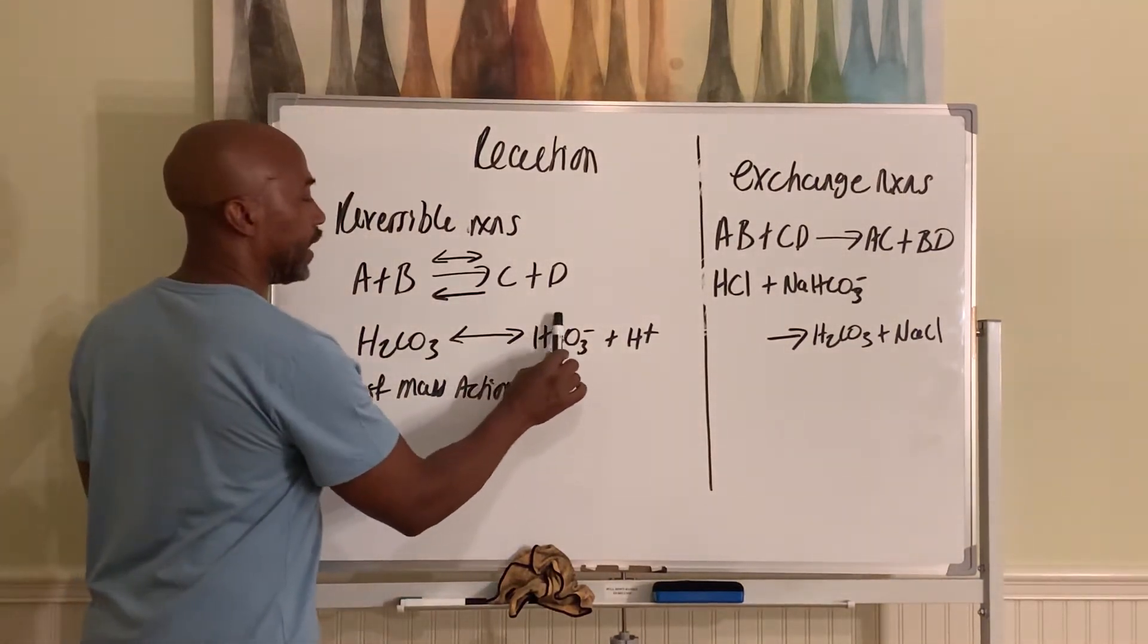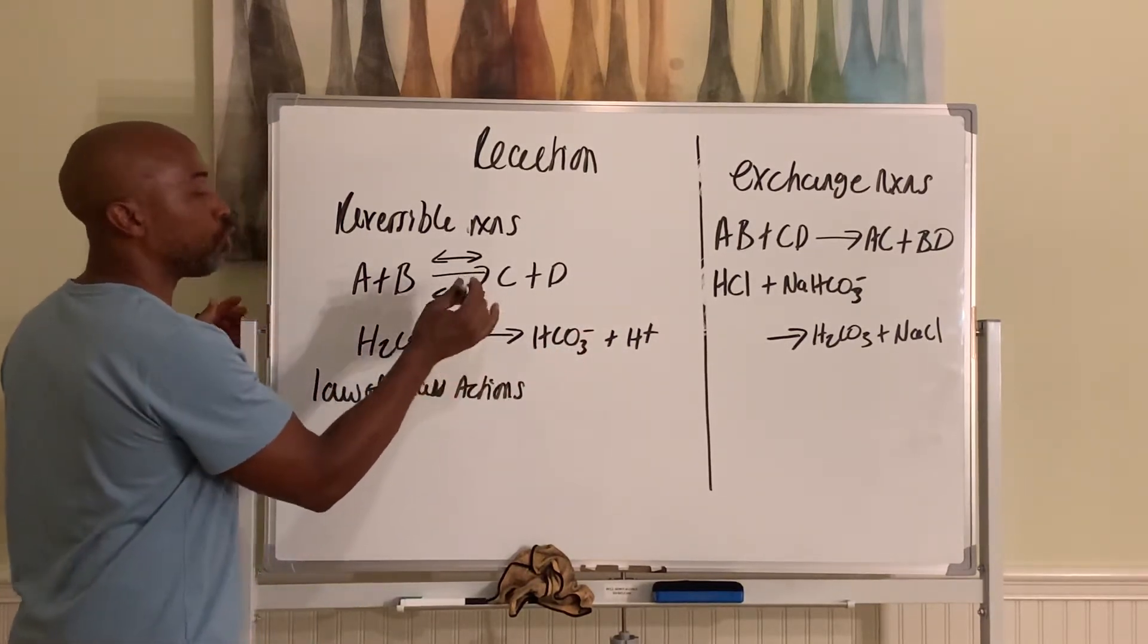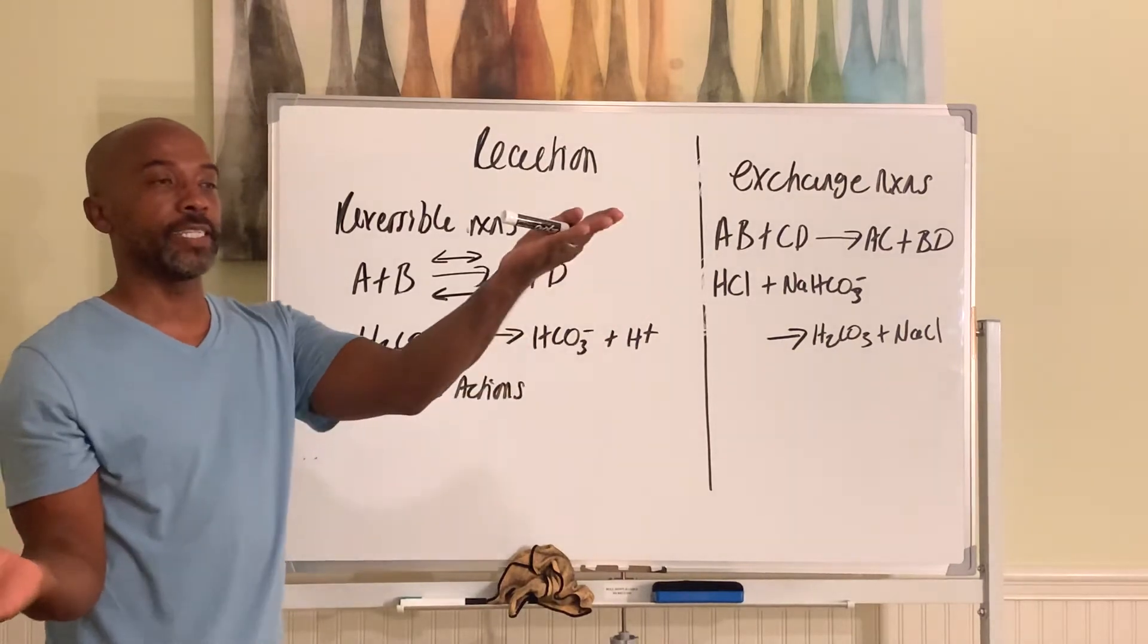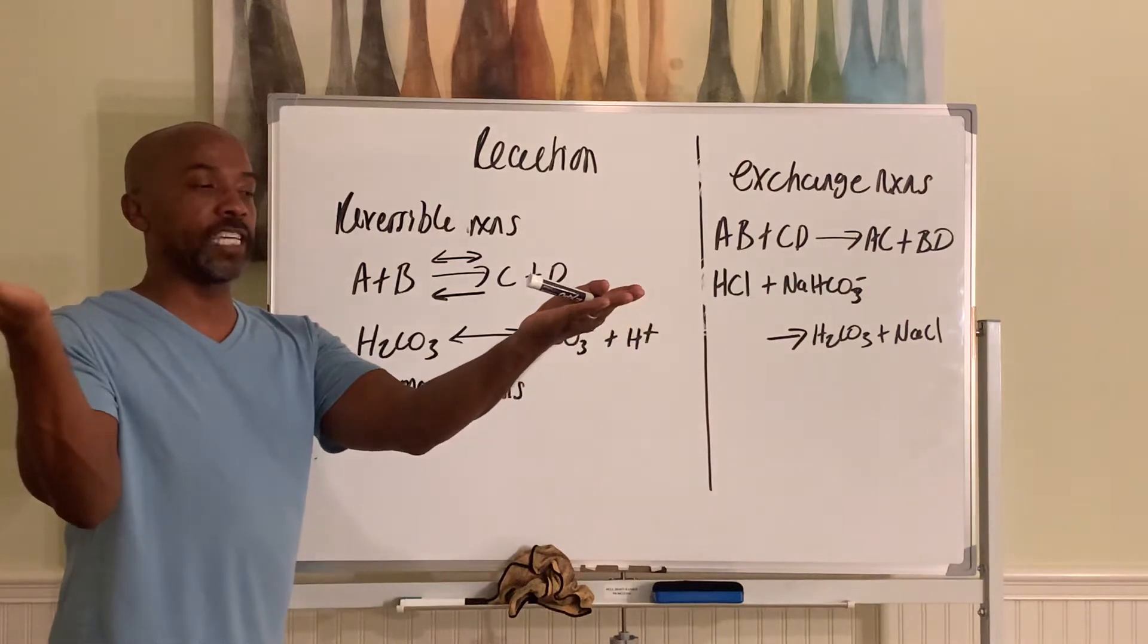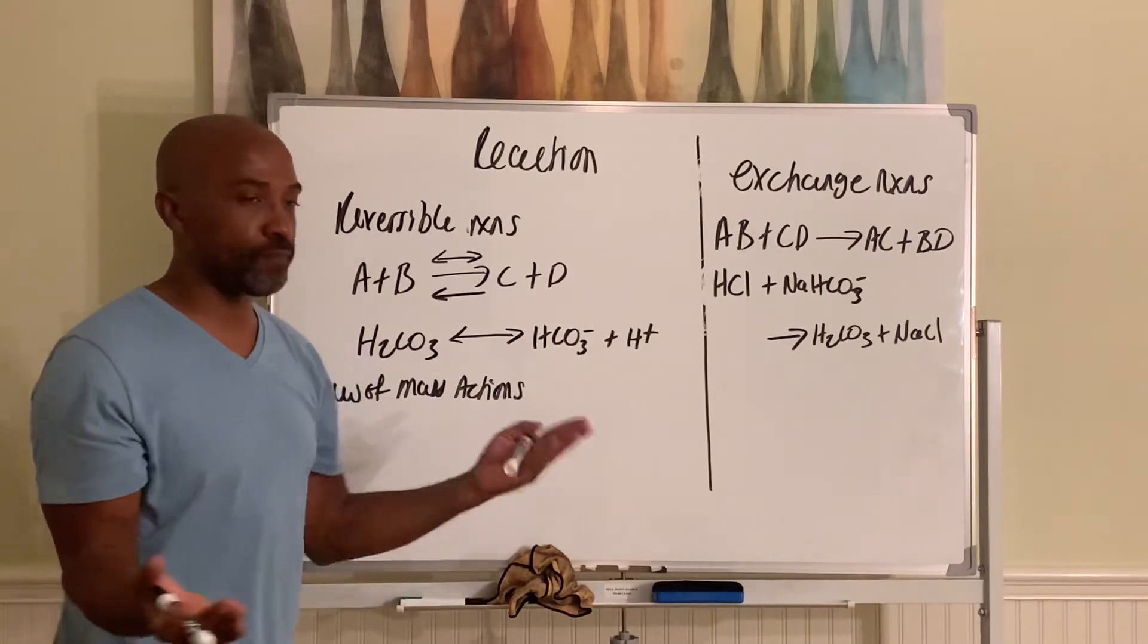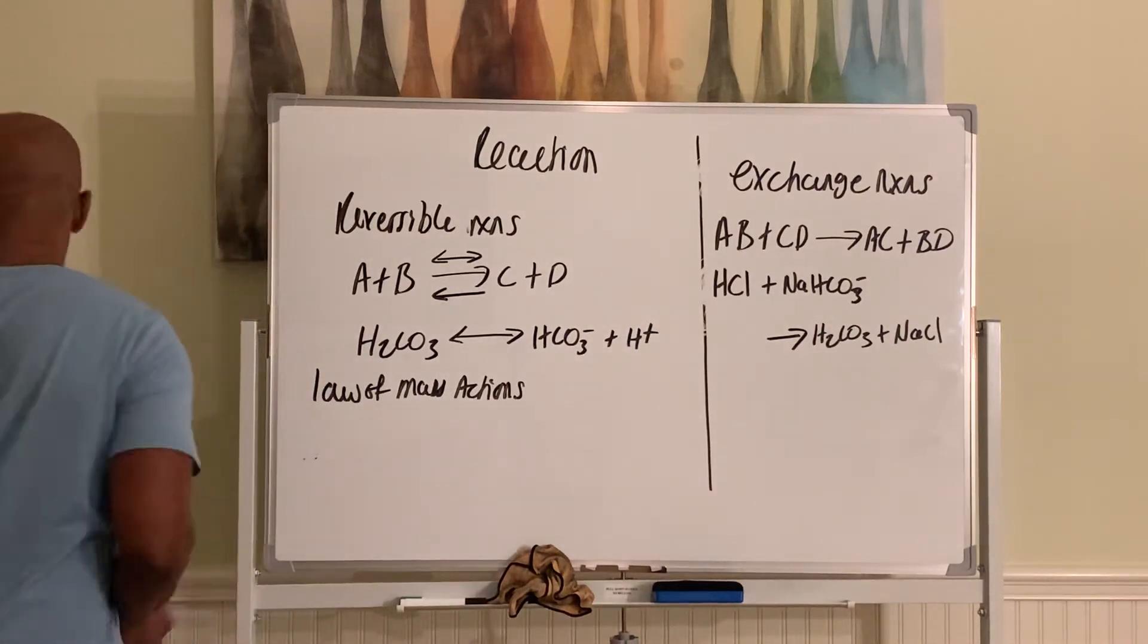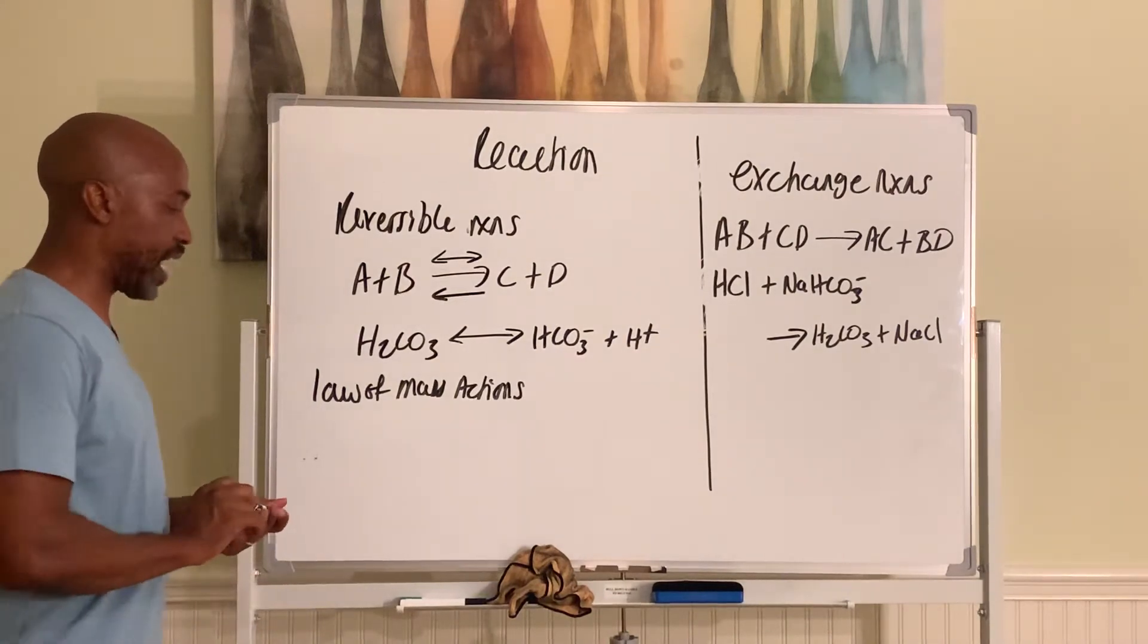And that law basically says that the reaction will go in a direction that will offset a change. Meaning, if this level goes up, the reaction will go this way to rebalance the equation. Because imagine that that is balanced this way. And you add more over here. Then in order to make it balanced again, you have to add more over here. If you take away something here, then you have to take away something from here to make it balanced. That's the law of mass action. Always do a change to counter a change or counter something that happened. So those are the four main types of reactions that we have in the body.